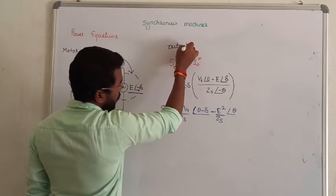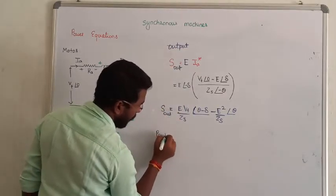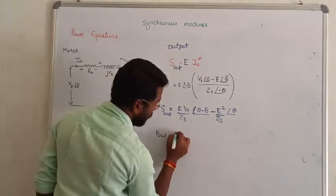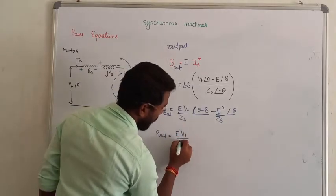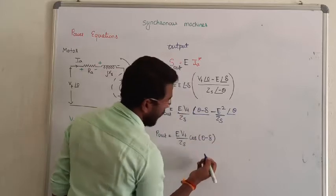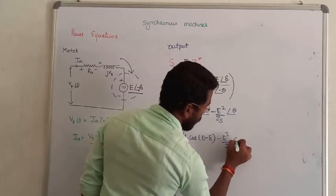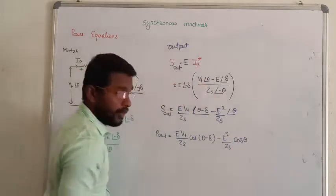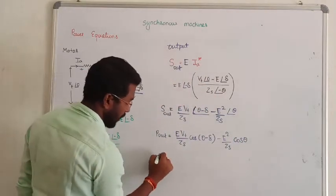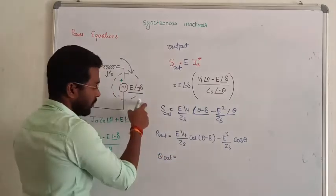Output power can be known. So from this, the output power can be written as output real power will become: E VT by Zs into cos of theta minus del minus E square upon Zs into cos theta. That is the real power absorbed by the synchronous motor.